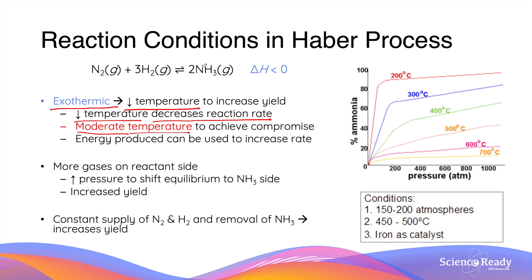Since the reaction of producing ammonia is an exothermic process, the amount of energy that's been produced can be also reused to increase the reaction rates. This reduces the amount of external energy we have to invest in the reaction and therefore makes the process more economical.